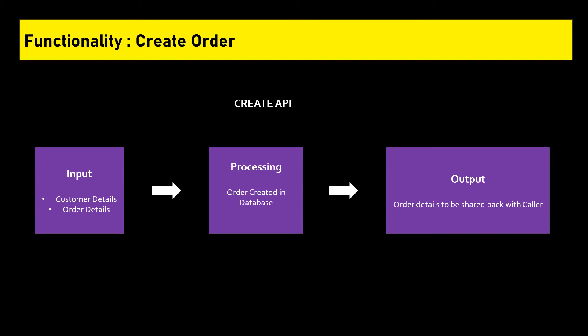Let's start with the input part. For order creation, at a minimum we would need: customer details such as name and delivery address; order details such as the food items to be delivered; and payment mode — whether the customer has already paid or it is cash on delivery. For the processing part, there can be validation of the input details and processing logic. The output includes auto-generation of an order number and storing the order details to a database. This API sends the generated order number back to the calling application as confirmation of successful order creation.